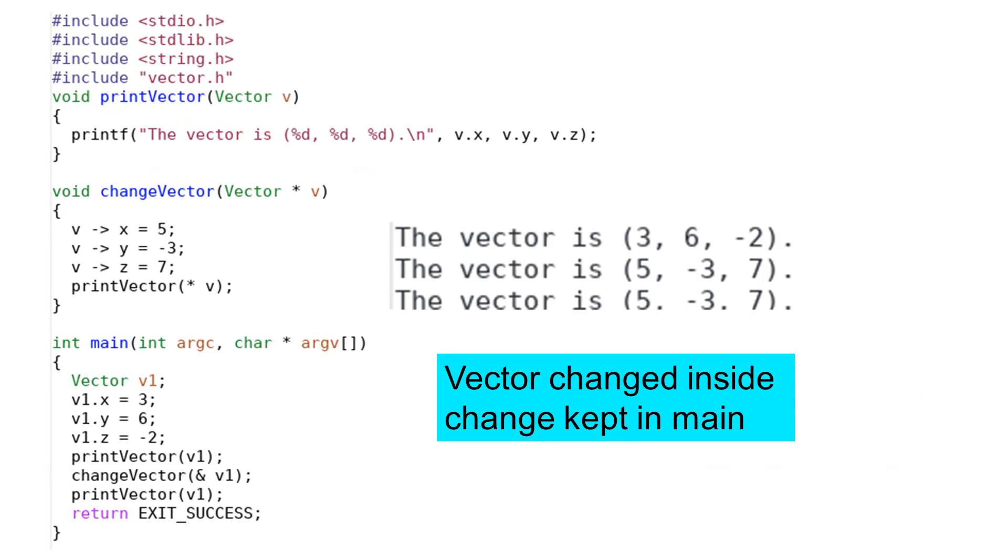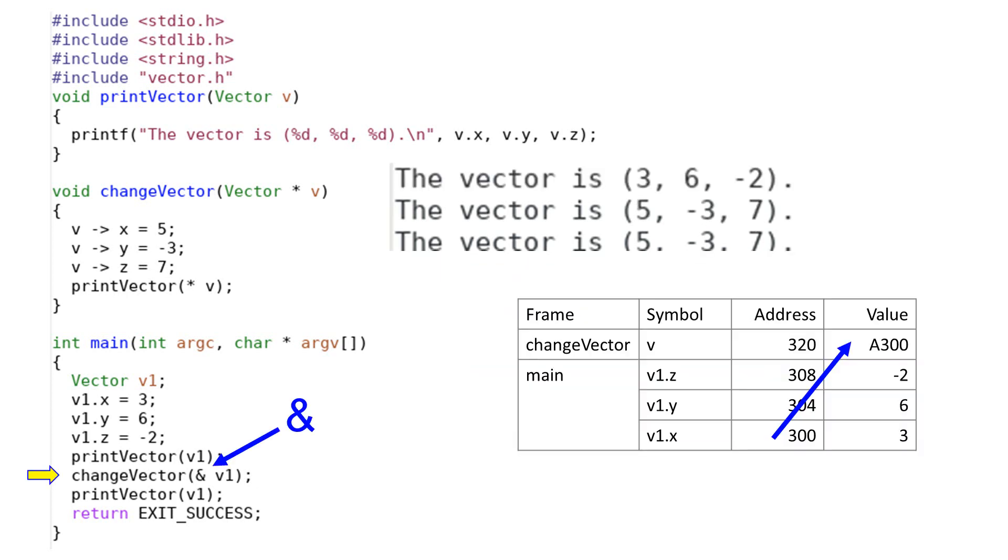What should we do if we want to change the vector inside the main function? We will use the same method as before, passing the address. In this example, the main function calls the change vector function using the address of v1. The function's argument must be a pointer. To get the address of v1, add ampersand in front of v1 when calling the function. Inside the function, we use v arrow to refer to x, y, or z. The arrow is written by using the minus sign followed by the greater than sign. Please notice that inside the change vector function, v is a pointer and stores the address of v1's dot x.